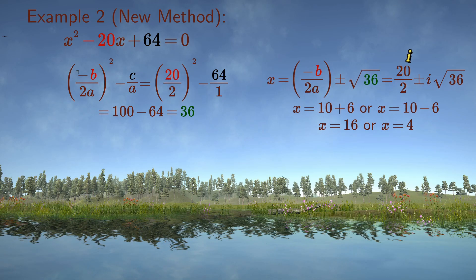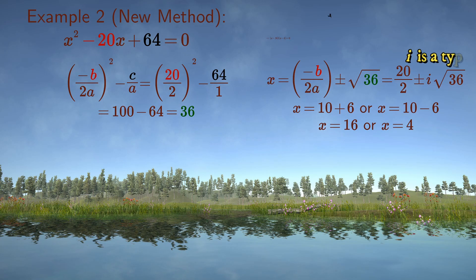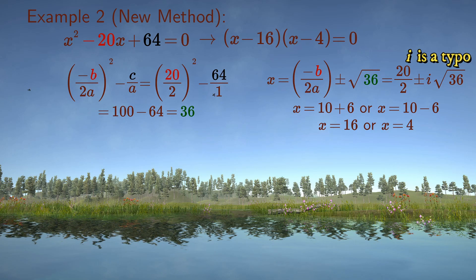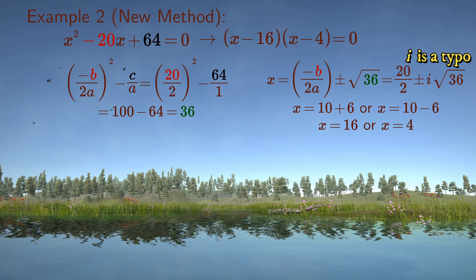We add these to the minus b over 2a equals 10 and get 16 and 4. This wasn't really more difficult to apply than the first example. The numbers were just a bit larger.